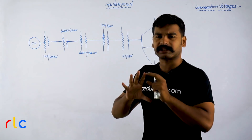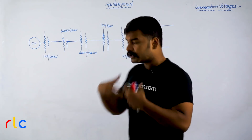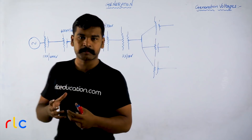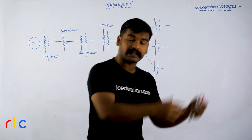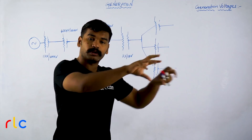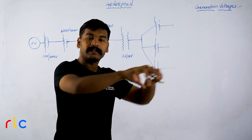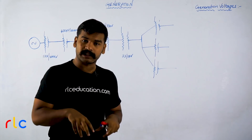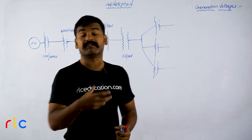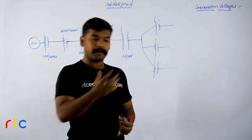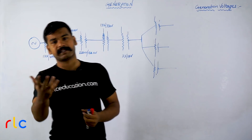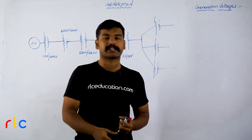A power system is essentially an arrangement of equipments. These equipments generate electricity, transmit it over longer distances, distribute it to different houses, and the electricity is then utilized. Protection of this system at every point of time is basically the combination that makes up a power system.